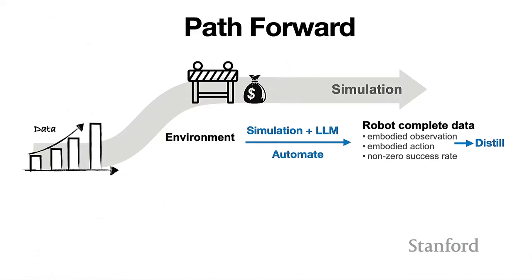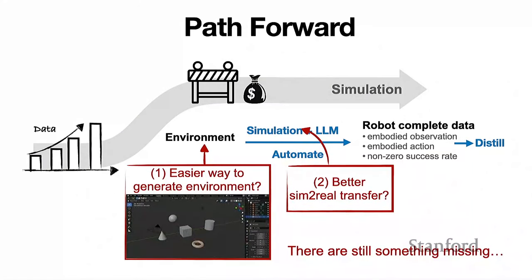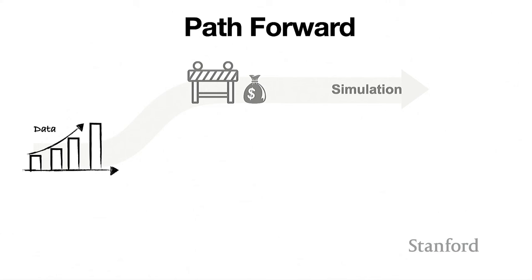This framework of scaling up and distilling down is quite general — you can use the large language model to generate training data for almost any task as long as you have the simulation environment. However, if you want to take this idea one step further for real-world robot deployment, there are still a lot of things missing — for example, how to generate the environment in the first place, like getting those CAD models and loading all the objects, which is still manual. And we need much better ways to do sim-to-real transfer; the rendered images still don't look realistic. Personally, I feel that with all the investments in generative AI, we can see a path that could be potentially improved in the future, but that requires waiting a little bit for better simulators or better sim-to-real techniques.